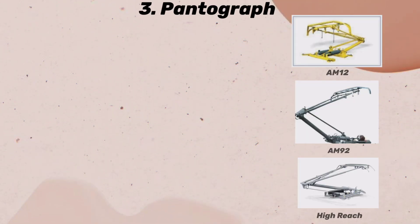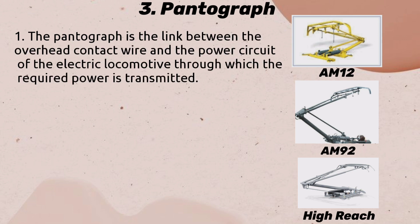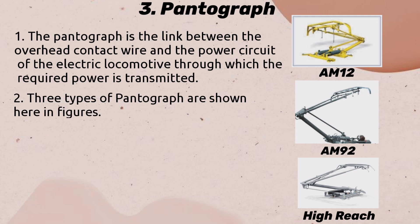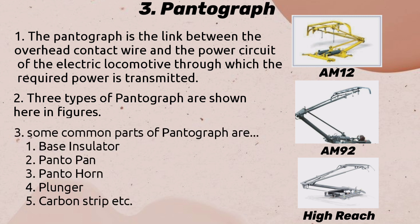Pantograph: The pantograph is the link between the overhead contact wire and the power circuit of the electric locomotive, through which the required power is transmitted. Three types of pantograph are shown here in figures. Some common parts of the pantograph are: 1. Base Insulator, 2. Panto Pan, 3. Panto Horn, 4. Plunger, 5. Carbon Strip, etc.